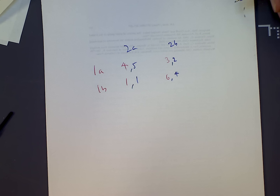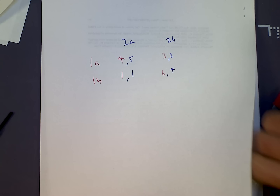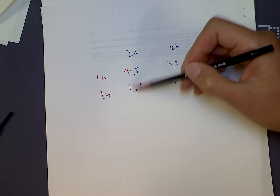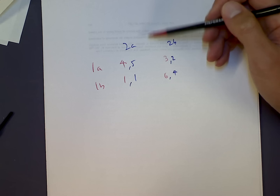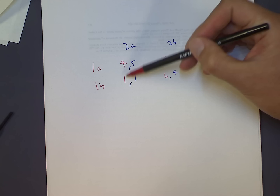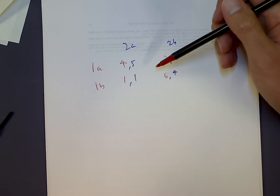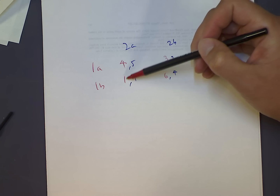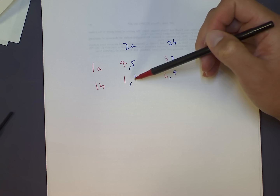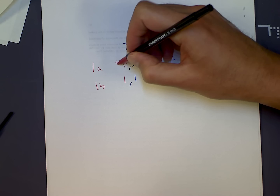So what are the pure Nash equilibria in this game? If player 2 does A, what's player 1's best response? If 2 plays A, player 1 is choosing between 4 and 1 — so which is the bigger number? 4. Right, so player 1 plays A in this case.